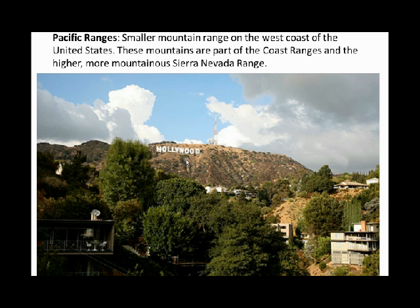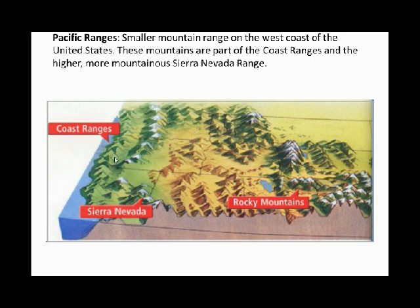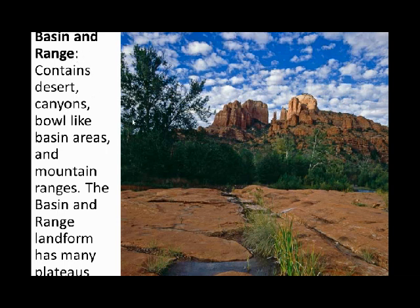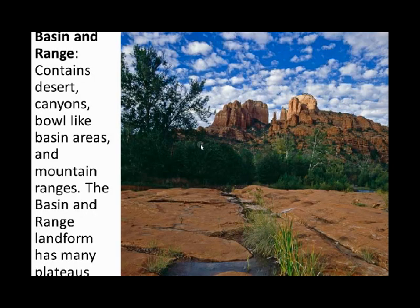Pacific Ranges — we're talking about the area on the west coast, and we're going to go from west to east. It's a smaller mountain range on the west coast of the United States. These mountains are part of the coast ranges and the higher, more mountainous Sierra Nevada range. Probably the most famous mountain in this range is the one right next to Hollywood with the Hollywood sign on it. This is the type of terrain you would see in the Pacific ranges — a very narrow, mountainous area. Here is an illustration from the textbook showing the coast ranges and the Sierra Nevada, which are a little bit higher.